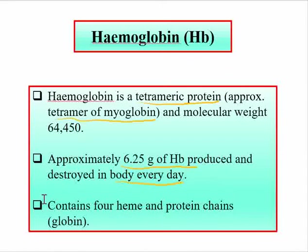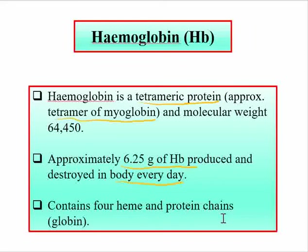Approximately 6.2 grams of hemoglobin are produced and destroyed in the body every day. Because hemoglobin is approximately a tetramer of myoglobin, it contains four heme groups and four protein chains. Myoglobin contains one heme and one protein chain, so as a tetrameric type, hemoglobin has four heme and four protein chains. The protein is generally the globin protein.